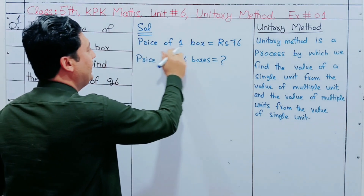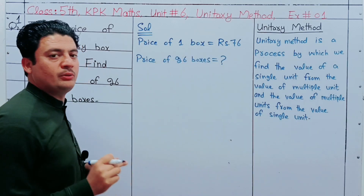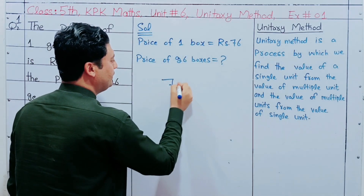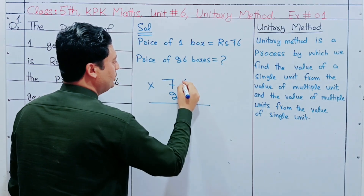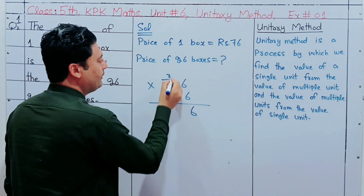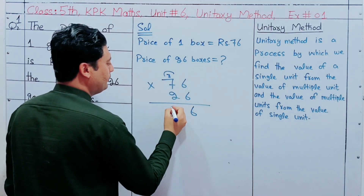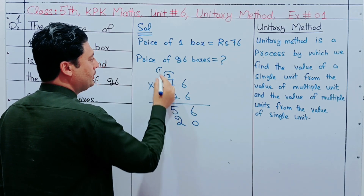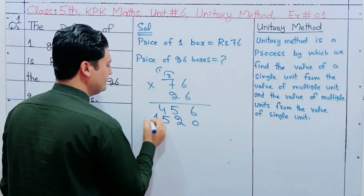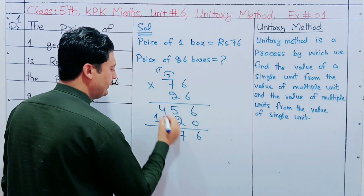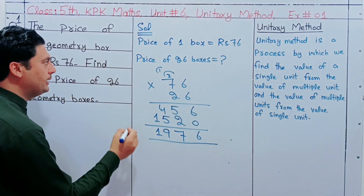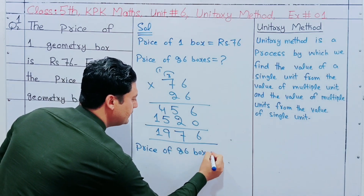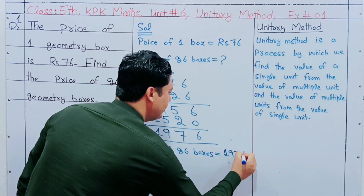The price of 1 geometry box is equal to 76 rupees, and we need to find the price of 26 geometry boxes. The price of 26 geometry boxes is equal to 1,976 rupees.